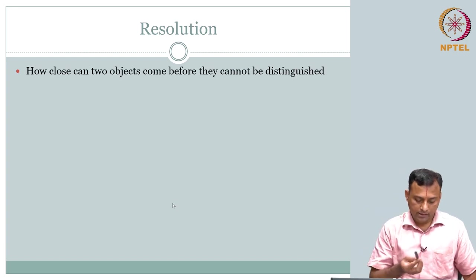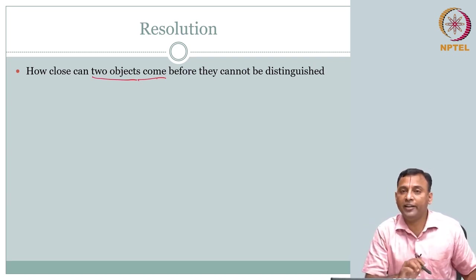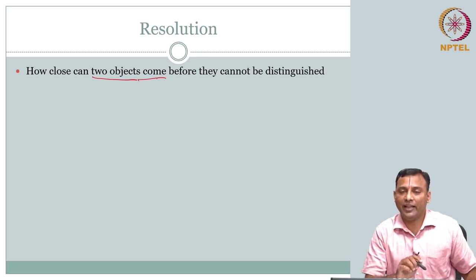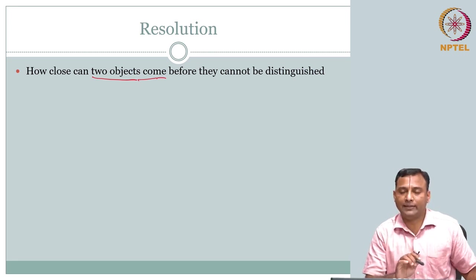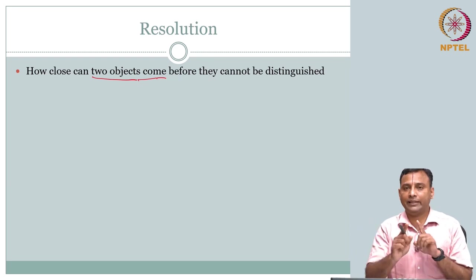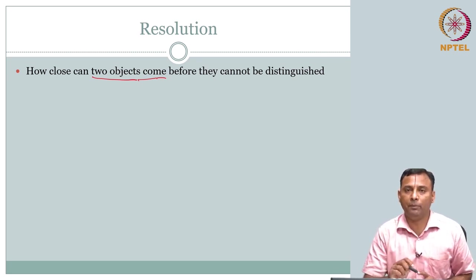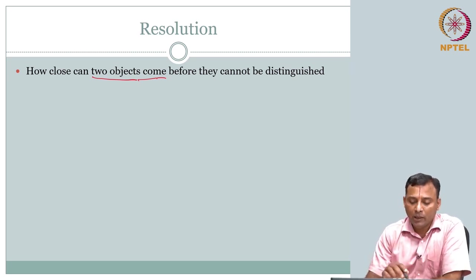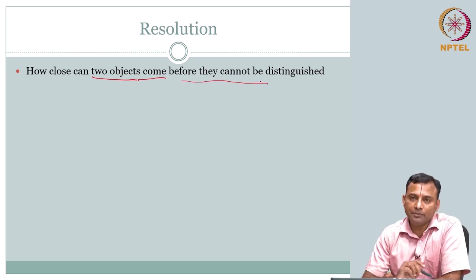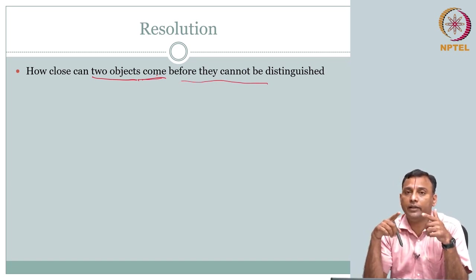I said 'come' without specifying units. In the imaging system, at least what we have covered so far, our coordinate is space. So in space, how close can two objects come — in x direction, in y direction — those were the spatial variables. How close can two objects come in space before they cannot be distinguished? That means you can already start to think: coming close in space is spatial resolution; coming close in time is temporal resolution.